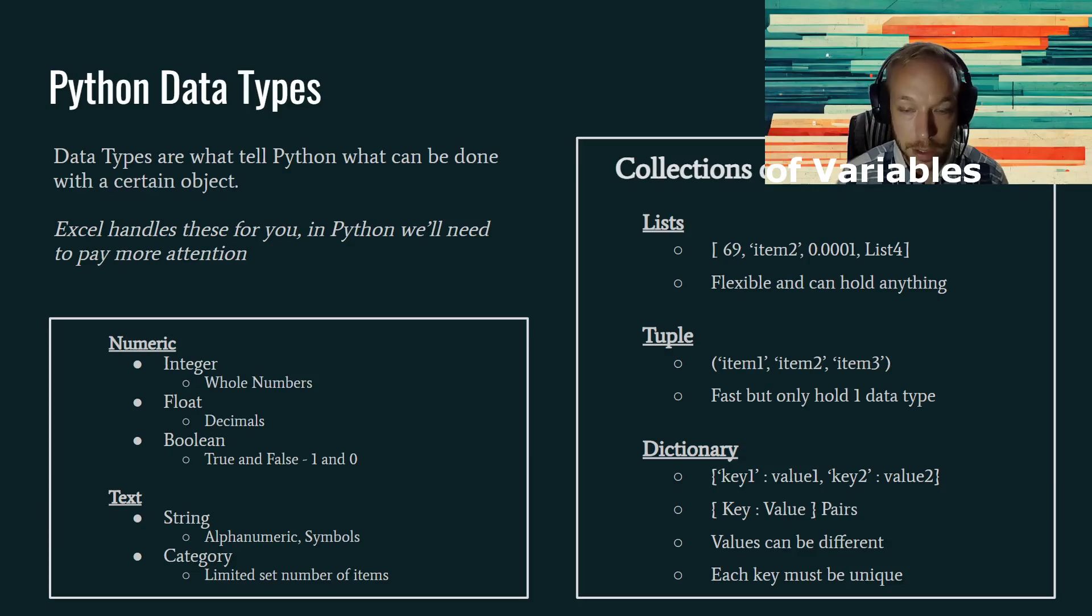There are numeric data types. So these are integers, which are whole numbers, floats, which are decimals, booleans, which are trues and falses. Which are equal to, and we'll go over this in more detail in the workbook, but equal to ones and zeros.